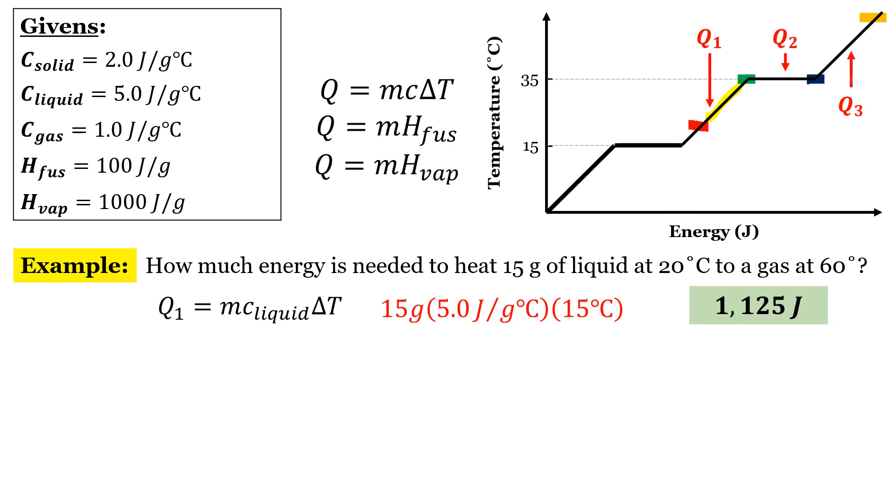The second part, going from the green to the blue, we're going to use the heat of vaporization. So again, we'll plug in our mass of 15. The heat of vaporization is 1,000 joules over grams. So 15 times 1,000 is 15,000 joules.